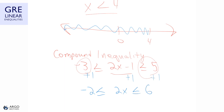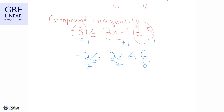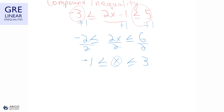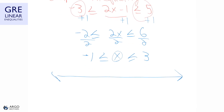Dividing all three parts by 2 gives negative 1 is less than or equal to x is less than or equal to 3. To graph this, draw a number line with 0 in the middle, mark negative 1 and 3 as endpoints, and shade the region between them. Since the inequality uses less than or equal to, fill in solid circles at both endpoints. The solution set is all x values between negative 1 and 3, inclusive.